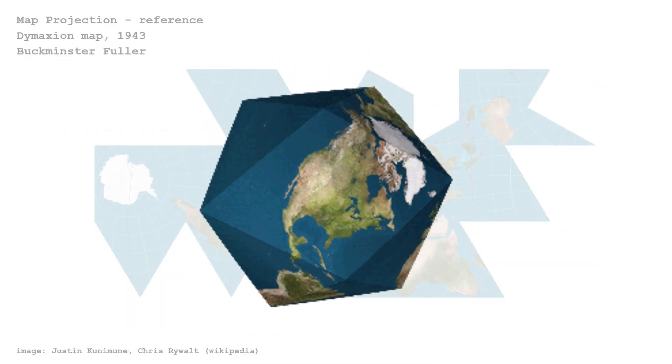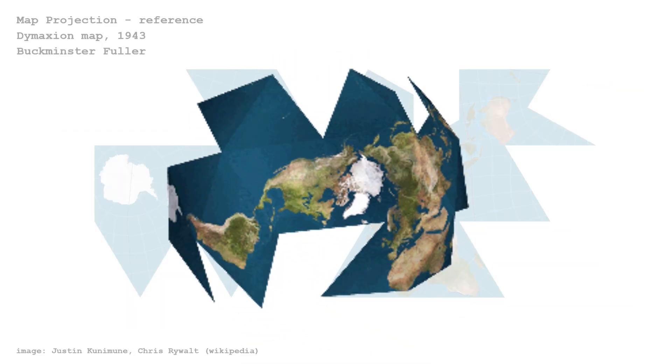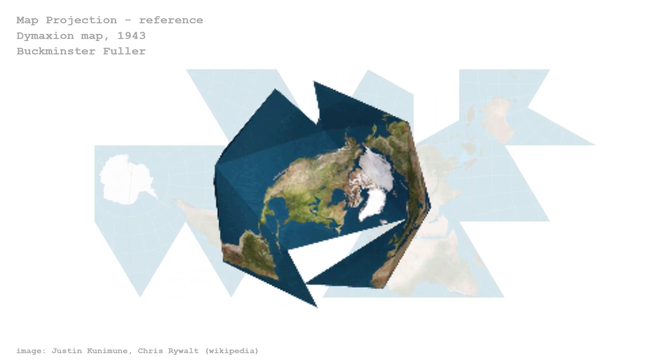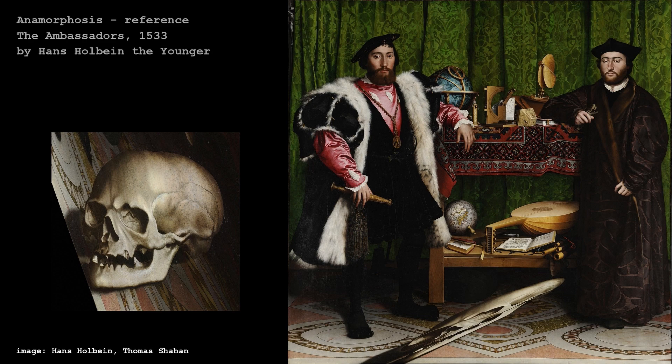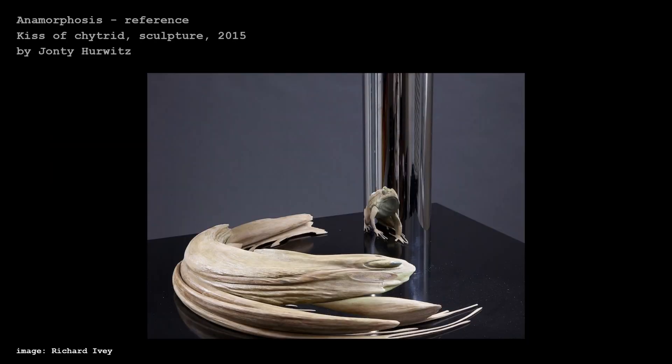Another reference is anamorphosis, which is a distorted projection. This is Holbein's 'The Ambassadors' — you can see an anamorphic skull in the foreground, which can be undistorted from a specific viewpoint. This is another anamorphosis reference: a cylindrical anamorphic frog sculpture by John T. Hurwitz, where you can see an undistorted frog on the cylinder.